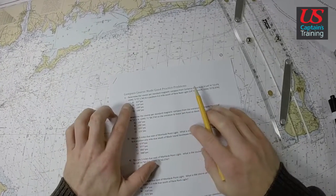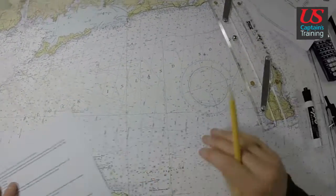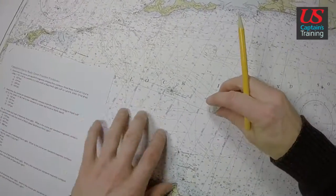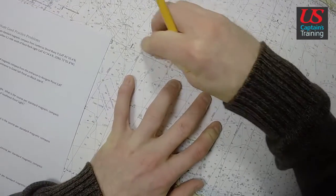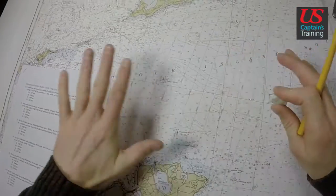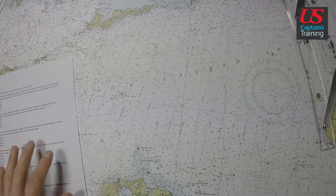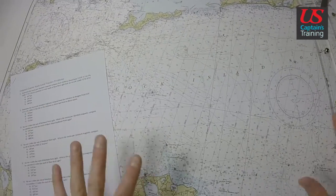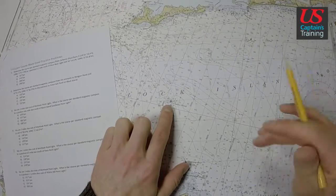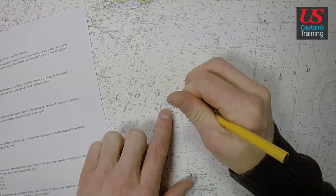First things first, let's find Sebris Shoal Buoy 9, that's our starting point. It happens to have some writing on it. It's good to erase any previous work that you've done so you don't get confused and end up with a lot of starting and ending points. Here's Sebris Shoal, we use the center of this circle for the buoy. This is our start point.